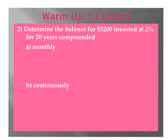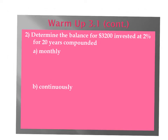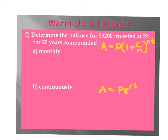This video is going to cover part two of the 3.1 warm-up and then beginning section 3.2. For the 3.1 warm-up number two, both parts A and B, we need the interest problem formulas. For the first one that's monthly, we use A equals P times 1 plus R over N to the NT. And for continuously, the second one, we use A equals P times E to the RT, or PERT. The question says: determine the balance for $3,200 invested at 2% for 20 years, compounded A monthly, B continuously.